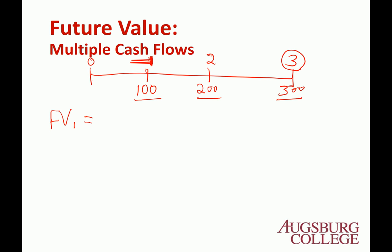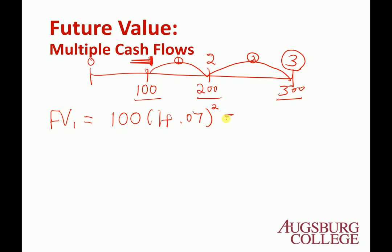What is the future value in year 3 for the first account? You have $100 deposited and 2 years of interest at 7% — from year 1 to year 3, that's 2 years. So 100 × (1.07)² equals $114.49.